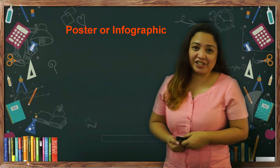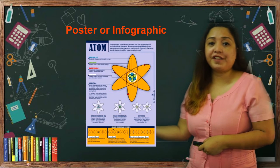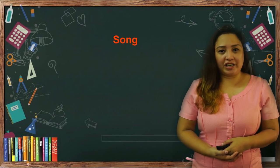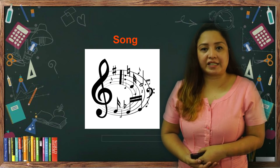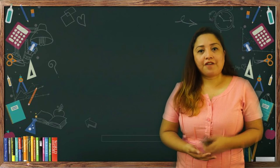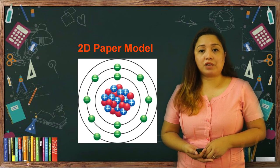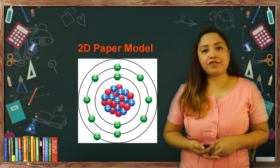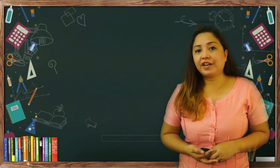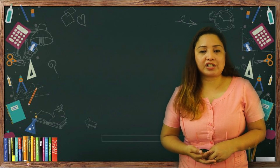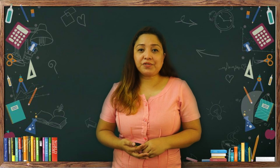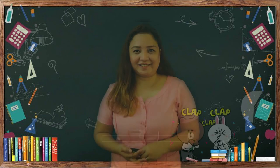For group one — visual learners — you are going to make a poster or infographic on a one-fourth size white cartolina. For auditory learners, you are going to create your own song about atoms and record yourself while singing it, then send a copy of your video. For kinesthetic learners, you are going to construct a 2D model of your atom using a one-fourth size white cartolina and small circles to represent your subatomic particles — make sure to use three different colors and follow the instructions listed in your activity sheet. That's it for today and I will see you in our next session. This is your teacher, Yara. Thank you.